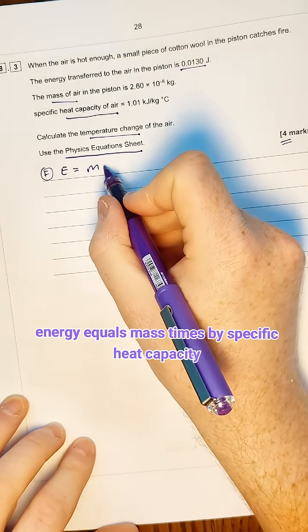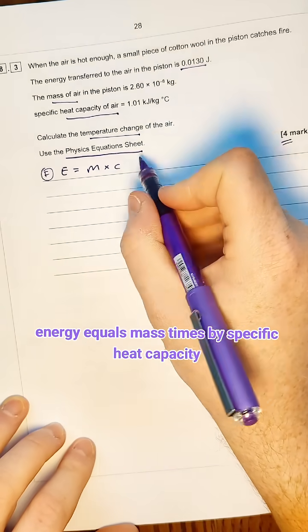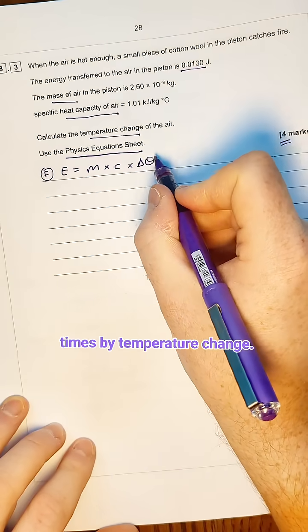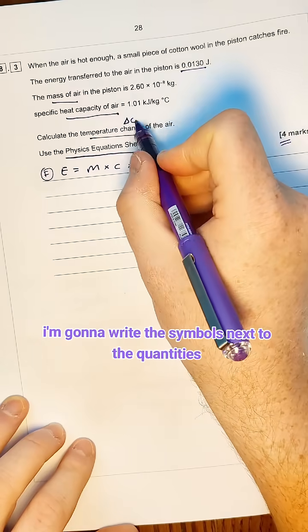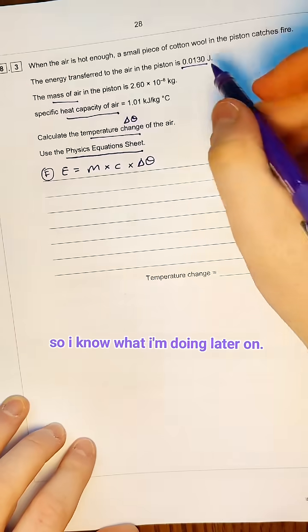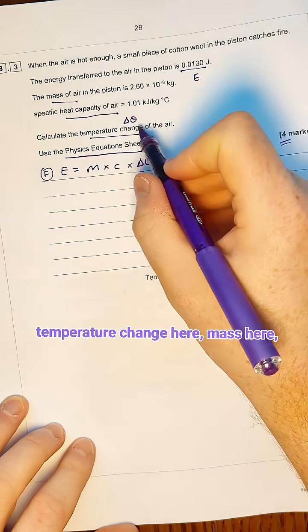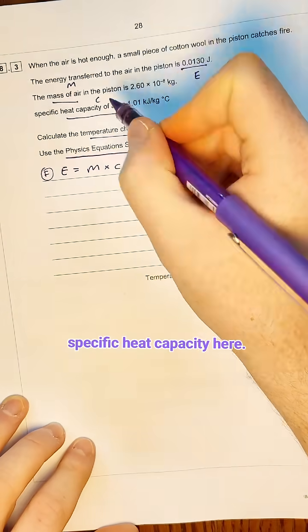I'm going to write down from my equation sheet: energy equals mass times specific heat capacity times temperature change. I'm going to write the symbols next to the quantity so I know what I'm doing later on. I've got energy up here, temperature change here, mass here, specific heat capacity here.